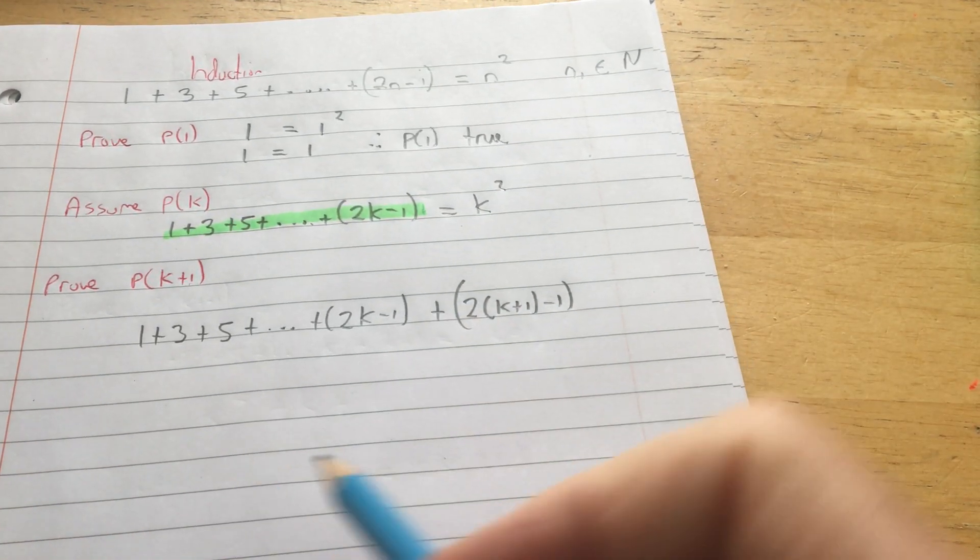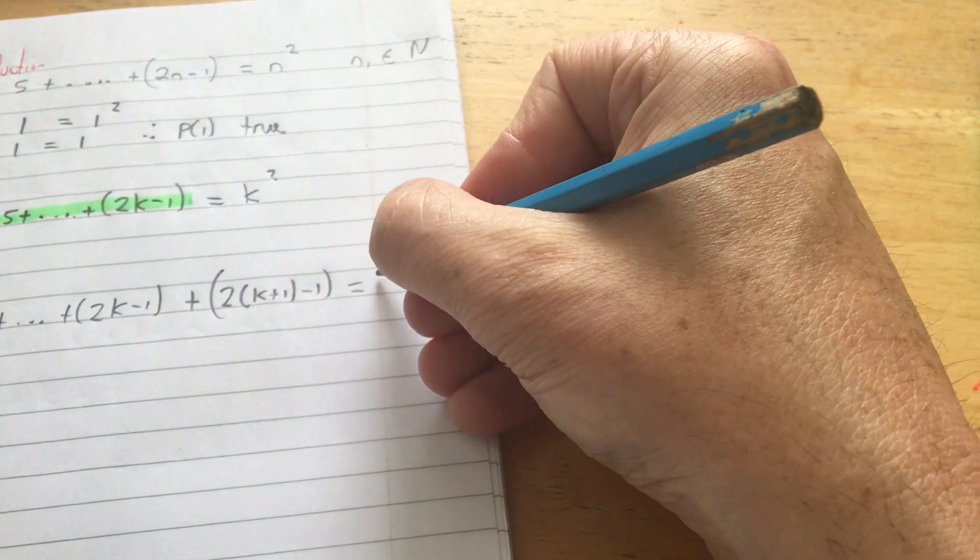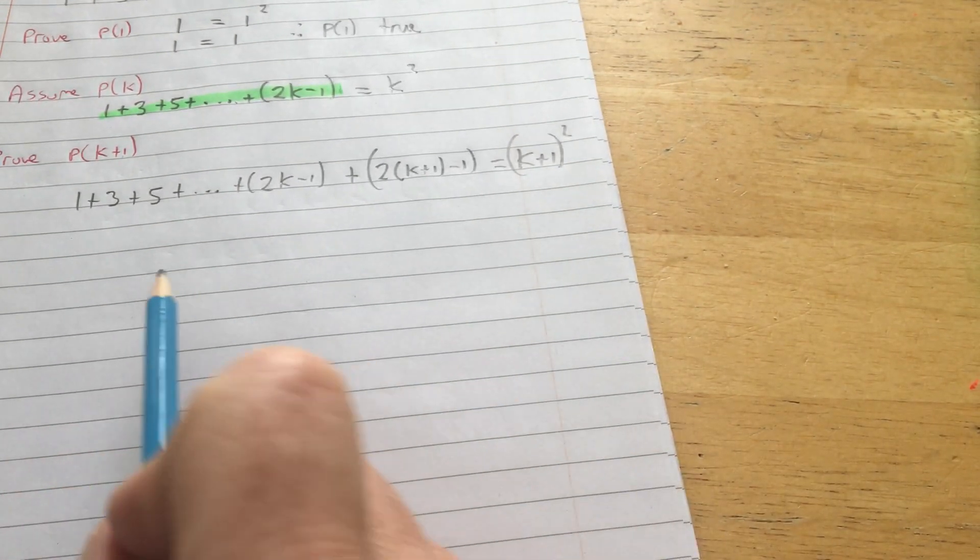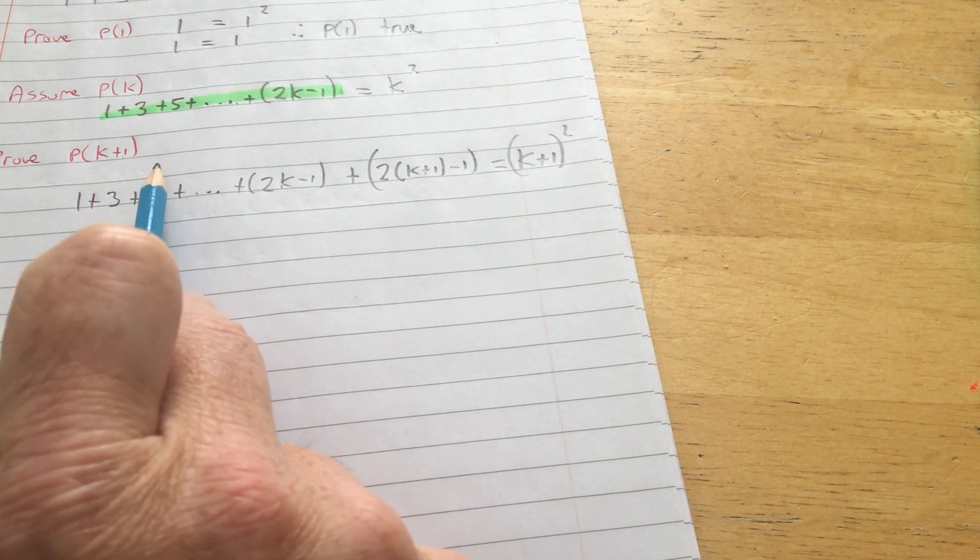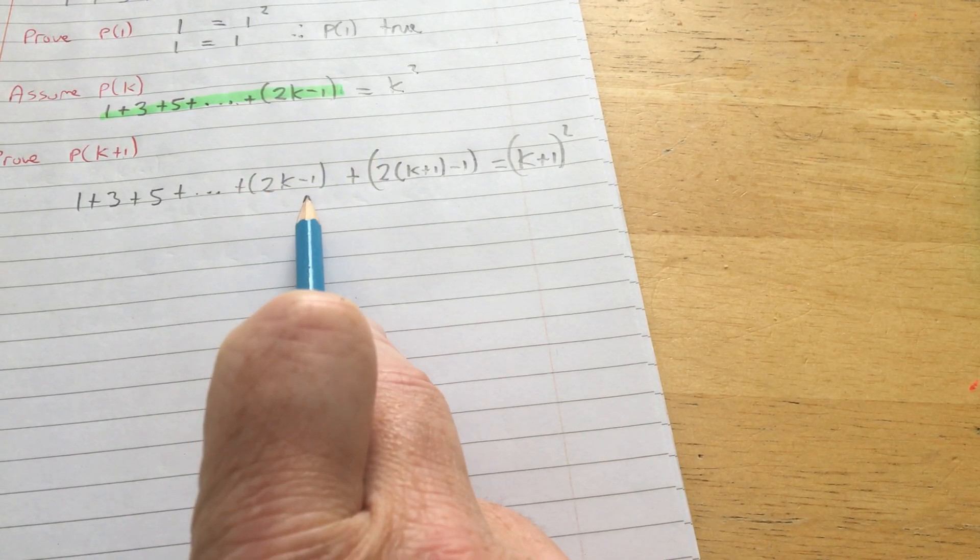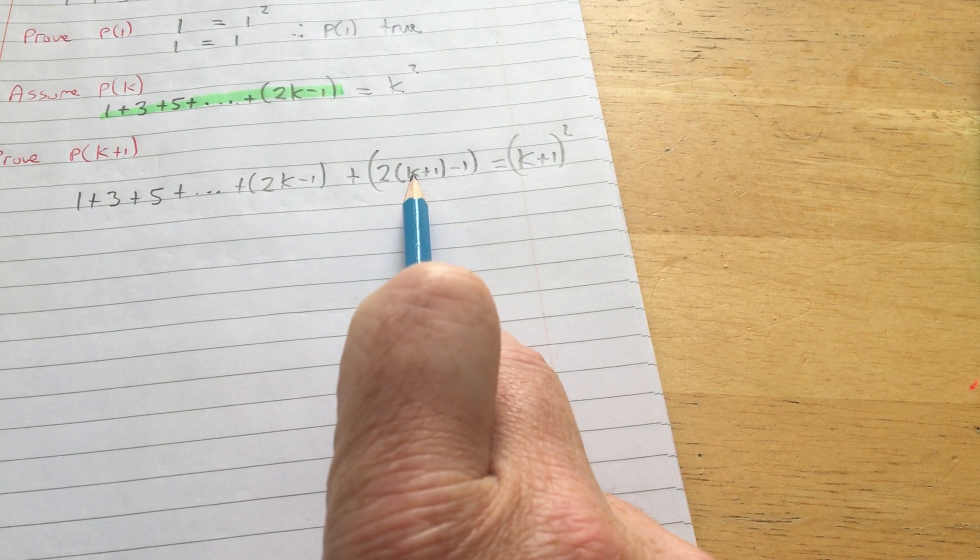So I'm just replacing, and I have to show that that's equal to k plus 1 squared. So just looking at that again, here's the P(k+1). This is all the numbers up to P(k). So then one more than that, just replace k with k plus 1.